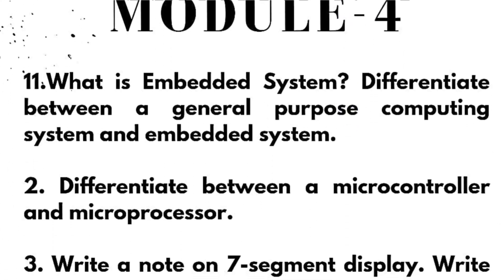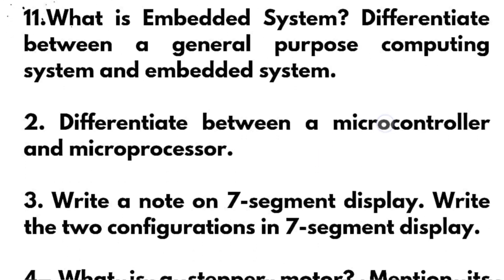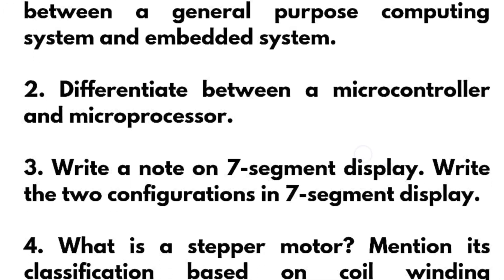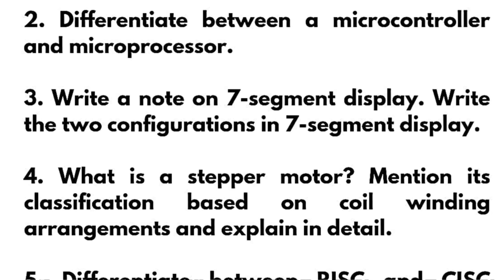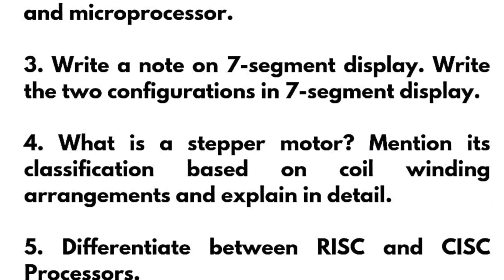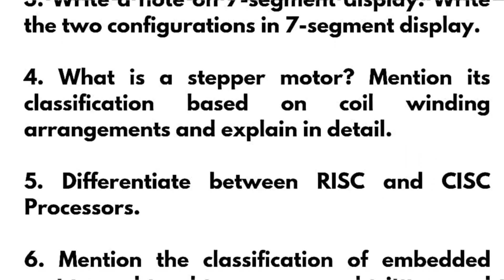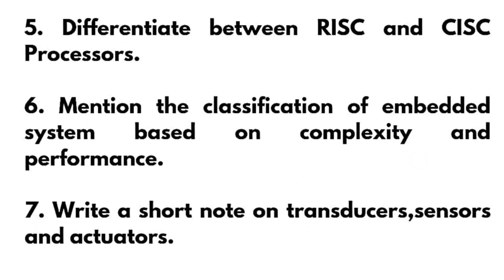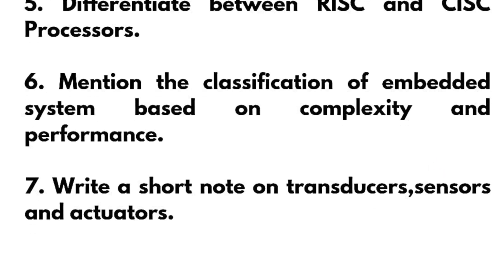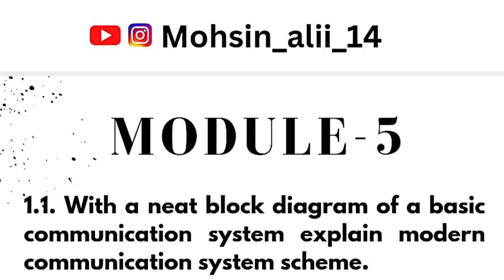Next we have module four which is a theoretical module. You have to cover questions like: what is embedded system? Differentiate between a general purpose computing system and embedded system. Differentiate between a microcontroller and microprocessor. Write a note on seven segment display, write the two configurations in seven segment display. What is a stepper motor? Mention its classifications based on coil winding arrangements and explain in detail. Differentiate between RISC and CISC processors. Mention the classification of embedded system based on complexity and performance. Write a short note on transducers, sensors and actuators. So in module fifth...